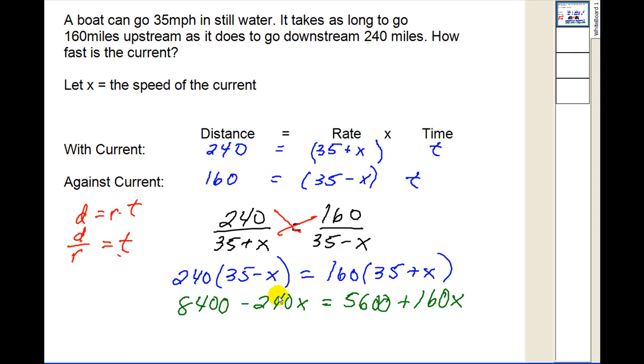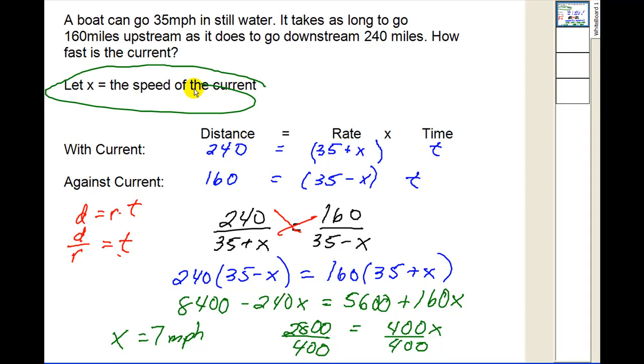Let's add 240x to both sides, that would give us 400x on the right. And then we'll subtract 5600 from both sides, that will give us 2800. Dividing by 400, we have x equal to 7, or 7 miles per hour would be the rate of the current. I hope that helps.